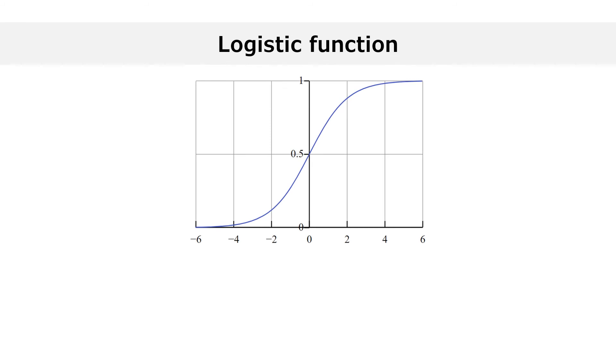Here's a plot of the logistic function. As you can see, it is a strictly increasing function that takes values between zero and one. It goes to zero when the score tends to minus infinity and it goes to one when the score tends to infinity.